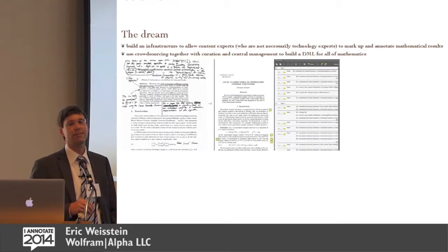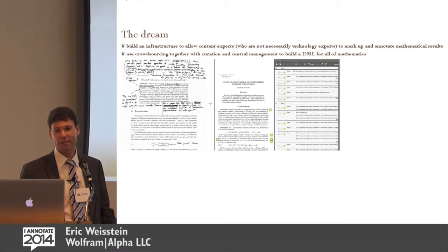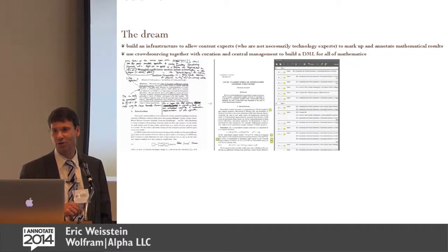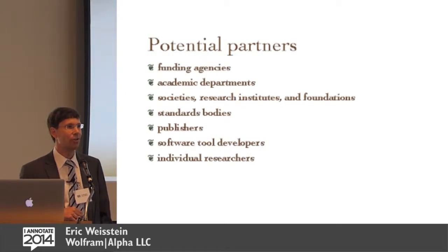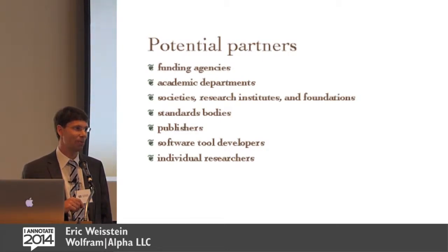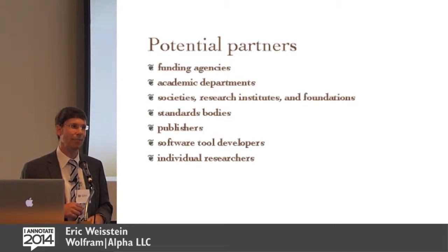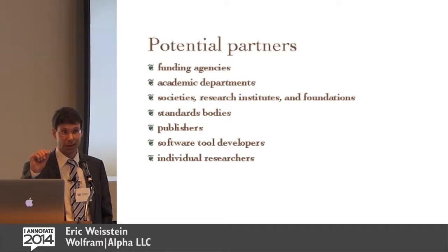The dream is to use techniques like this to build an infrastructure and allow content experts to mark up and annotate mathematical results, and to use crowdsourcing together with curation and central management to build a digital math library for all of mathematics. Who would be potential partners? Pretty much everybody in this room who knows a lot about different things than we do. Our goal would be to build tools, build infrastructure, maybe help with the organization, but to build on something like a Wikipedia model — get people who are interested in and knowledgeable about math to create the Wikipedia of mathematics, but not just in human-readable form, but in computer-readable and computational form.